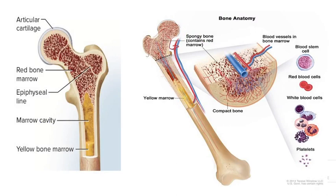Bone marrow is actually a very soft, highly vascular structure with a sponge-like consistency. There is sponge-like connective tissue inside the bone cavity. It is highly vascularized, meaning it has a rich blood supply.